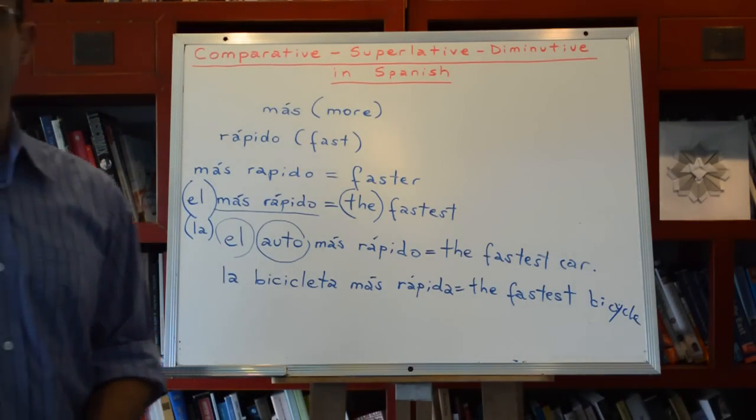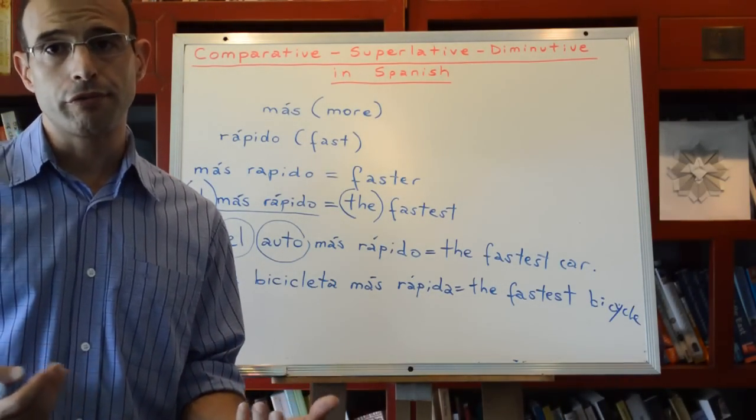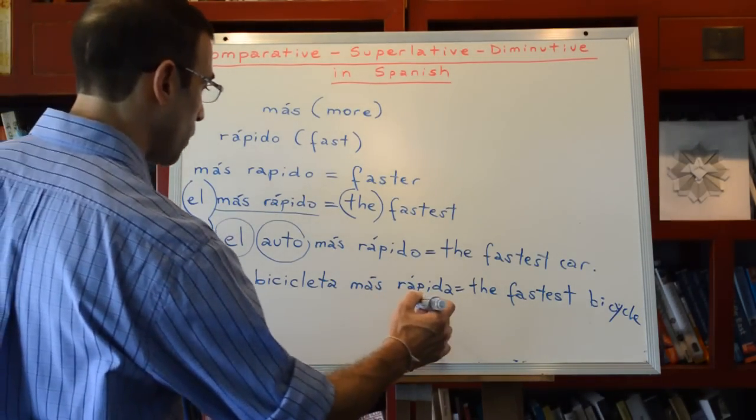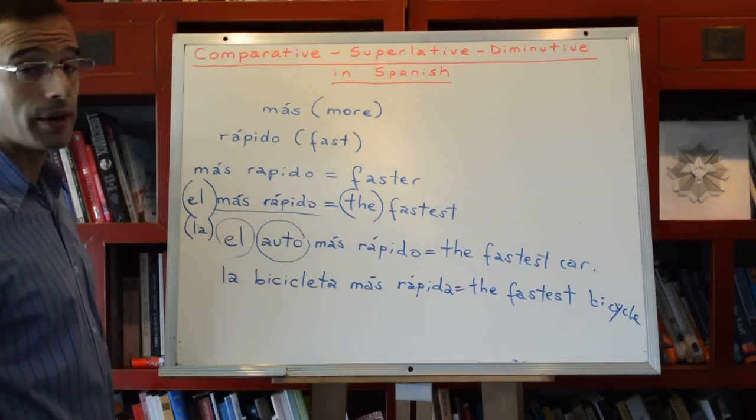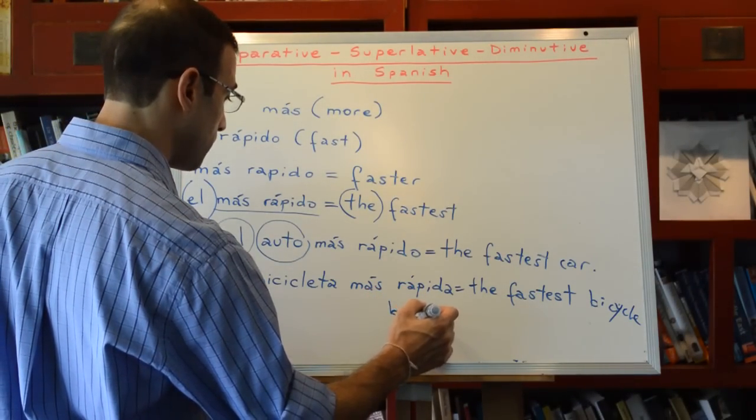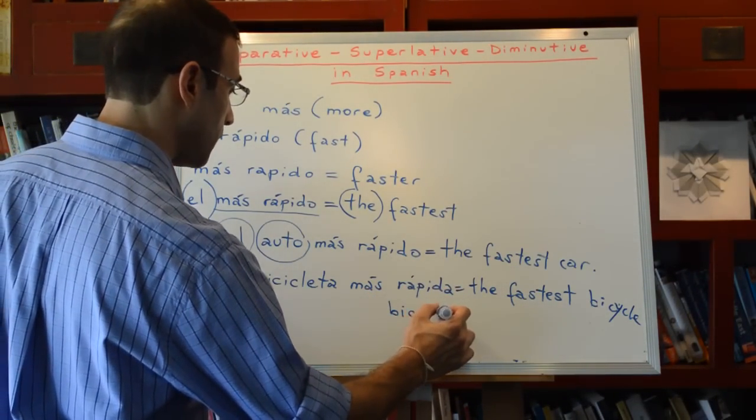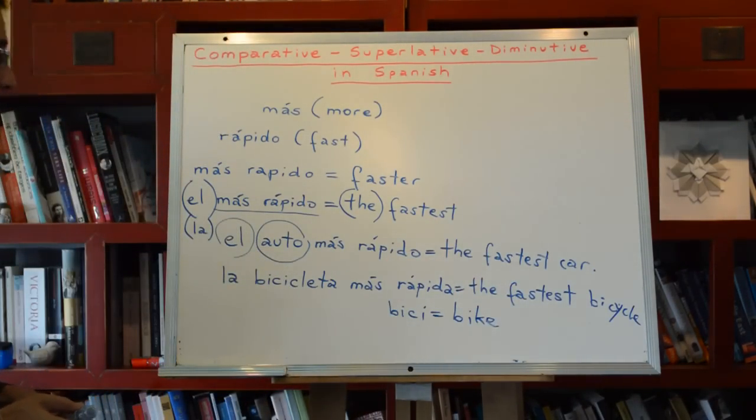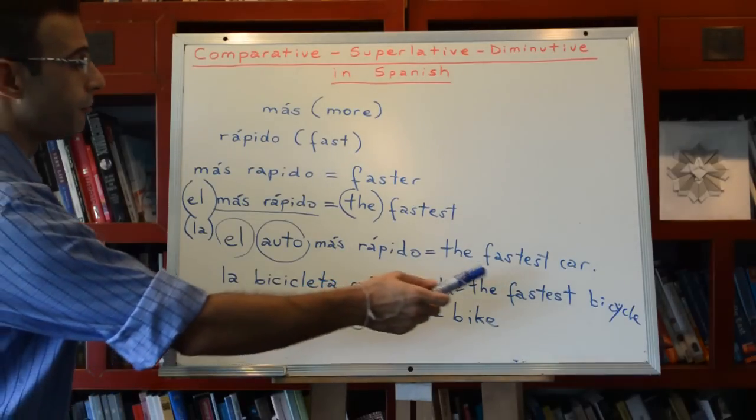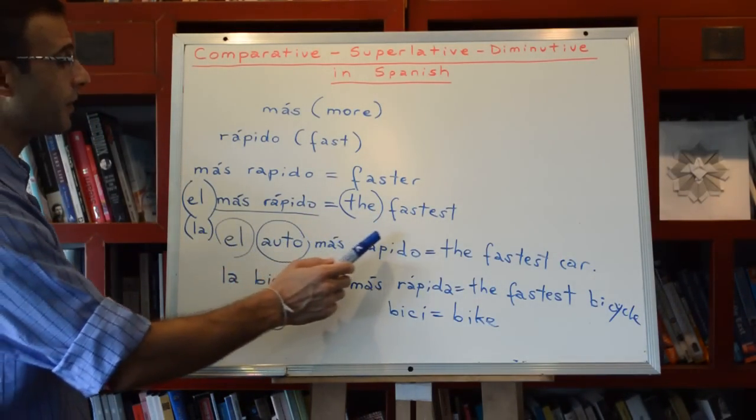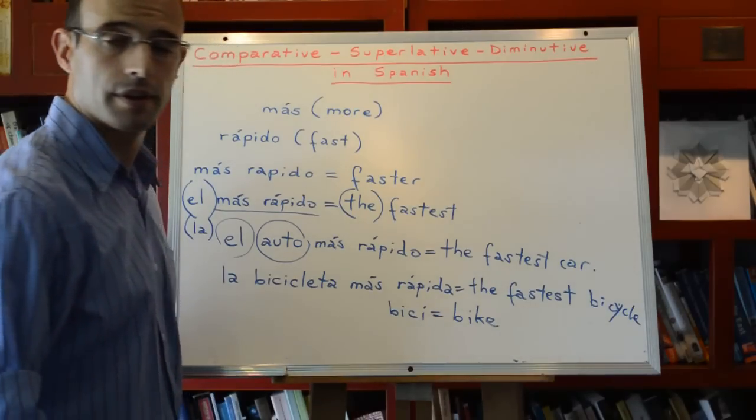Same as in English, we have the short form of bicycle, which is bike. In Spanish, we also have the short form of bicicleta, which is bici. Bici is bike. So, la bicicleta más rápida, the fastest bike, bicycle. El auto más rápido, the fastest car.